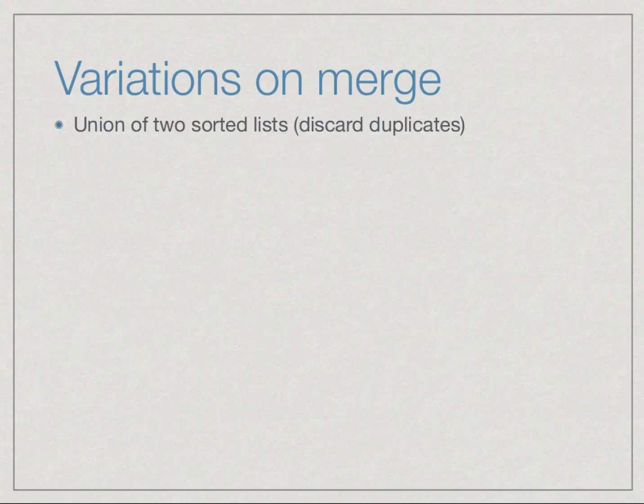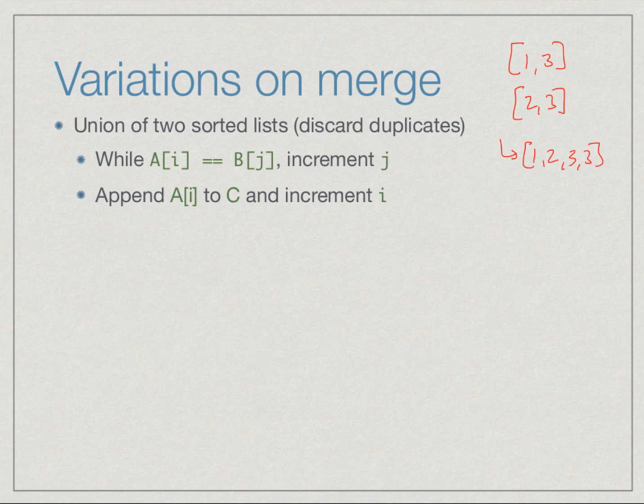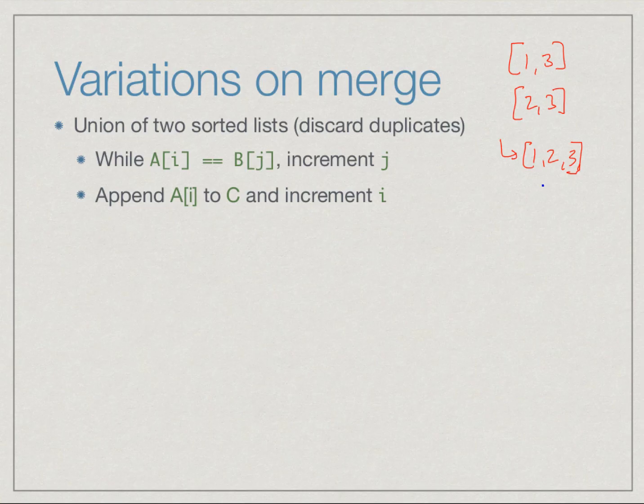Merge turns out to be a very useful operation. What we saw was to combine two lists faithfully into a single sorted list. In particular, if we had duplicates, if we merge 1, 3 and 2, 3, then we end up with a list of the form 1, 2, 3, 3. This is how merge would work - it doesn't lose any information, it keeps duplicates and faithfully copies them to the final list.